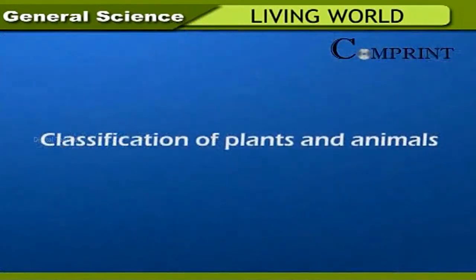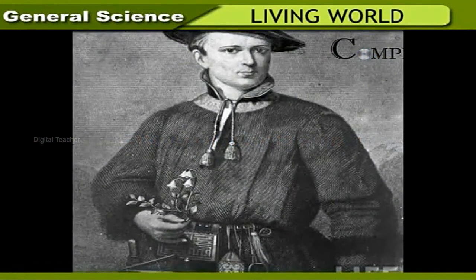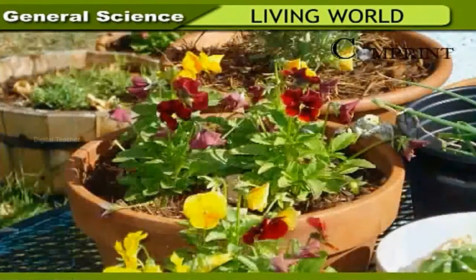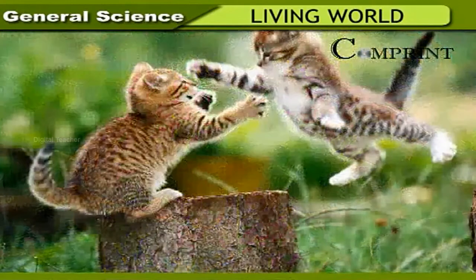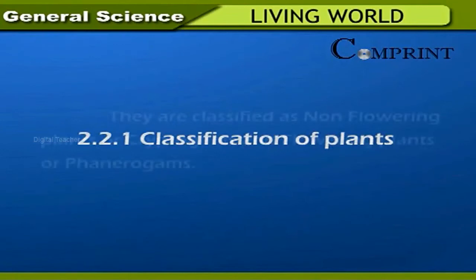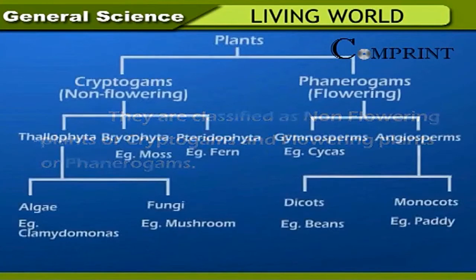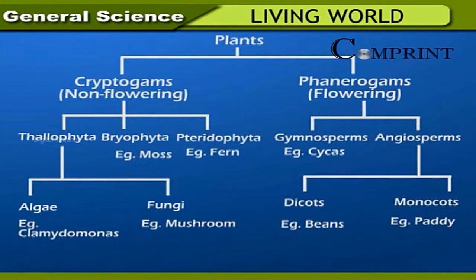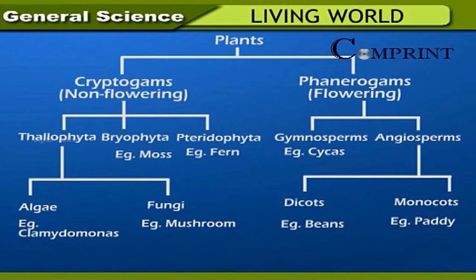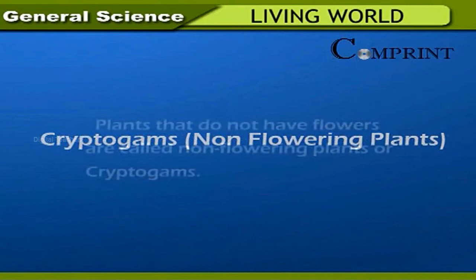Carolus Linnaeus, a biologist, classified plants on the basis of their reproductive organs. Animals were classified based on similarities and differences in their body structure. Plants are classified as non-flowering plants (cryptogams) and flowering plants (phanerogams). Cryptogams are divided into Thallophyta, Bryophyta (e.g., moss), and Pteridophyta (e.g., fern). Thallophyta is further divided into algae (e.g., Chlamydomonas) and fungi (e.g., mushroom). Phanerogams are divided into gymnosperms (e.g., cypress) and angiosperms, which include dicots (e.g., beans) and monocots (e.g., paddy).